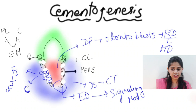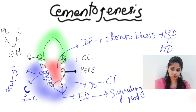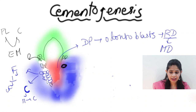The cementoblast cells orient parallel to the root sheath and help in the formation of the immature cementum — the cementoid tissue. The fibroblast cells orient perpendicular to the root surface, helping in collagen fiber synthesis.